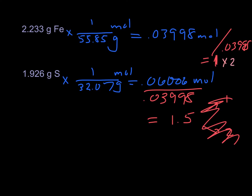So sometimes when you get to this last step, instead of having a whole number, you have something 0.5. You just have to double them both. So you get Fe2S3.